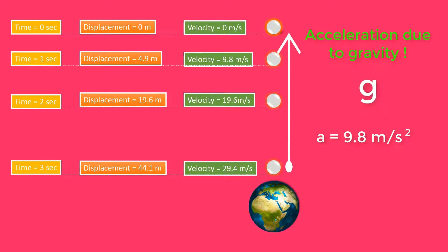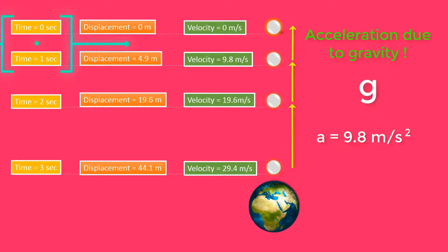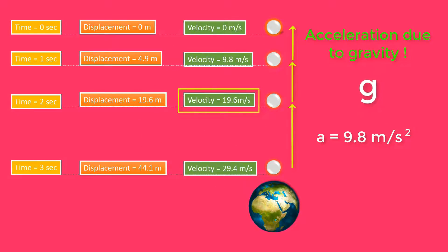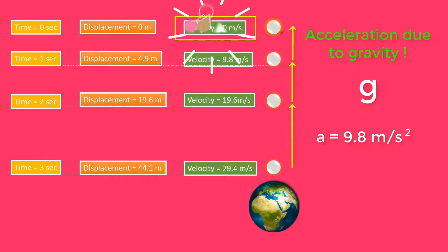When a body is thrown upward, its velocity decreases. The velocity decreases from 29.4 m/s to 19.6 m/s, then from 19.6 m/s to 9.8 m/s, then from 9.8 m/s to 0 m/s. In the last second, velocity changes from 9.8 m/s to 0 m/s. Hence the acceleration at the peak point is still 9.8 m/s².